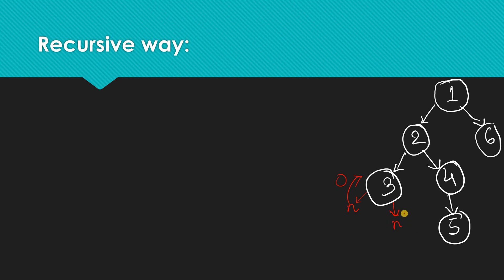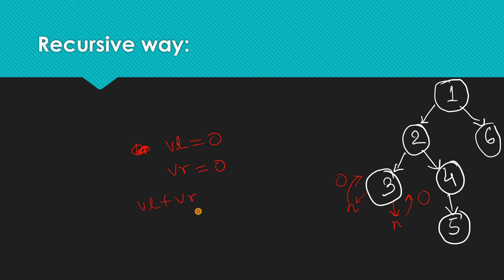When we hit null on the right side, we also return zero. For each node, we add the value returned from the left side and the value from the right side, then add one to it. For example, node 3 gets zero from the left and zero from the right, so it returns zero plus zero plus one, which is one.